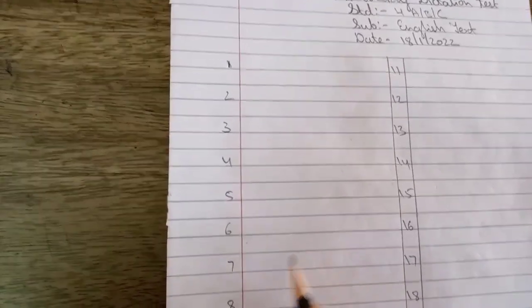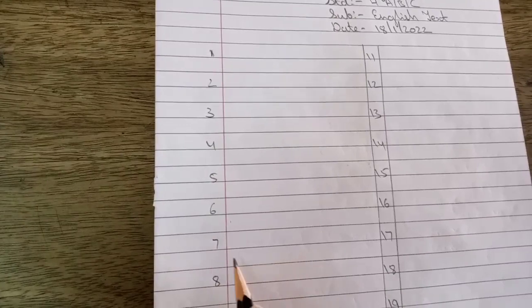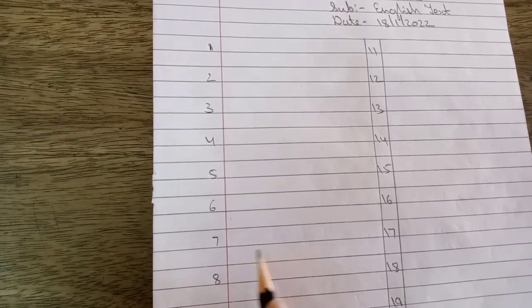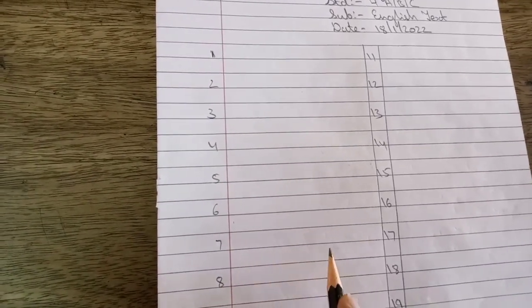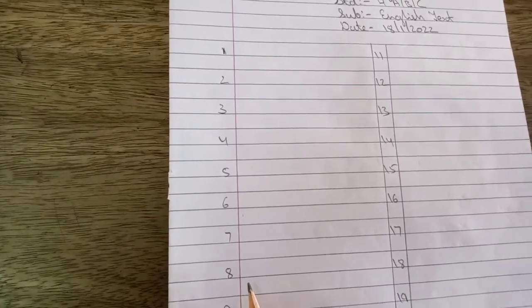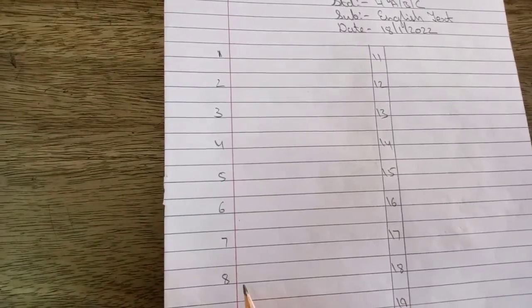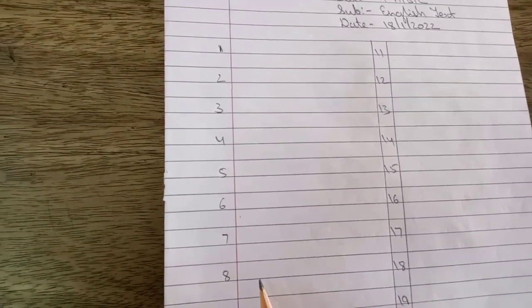Number seven: irregular, irregular, irregular. Number eight: economics, economics, economics, economics.